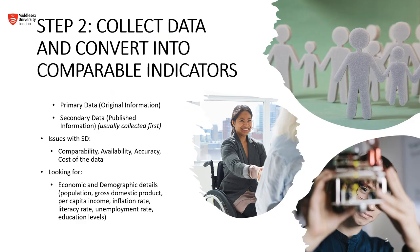This leads us to the second step of the five-step process, which involves collecting data and converting that data into comparable indicators. When we have data, it really breaks down into two simple forms: primary data and secondary data. Primary data is where we go out and physically collect the information — information that's not been published, like interviews, telephone calls, or surveys. Whereas secondary data is information that has already been collected, analyzed, and published, so this information is readily available. This includes journal articles, news briefings, or other information that we can read and gather.